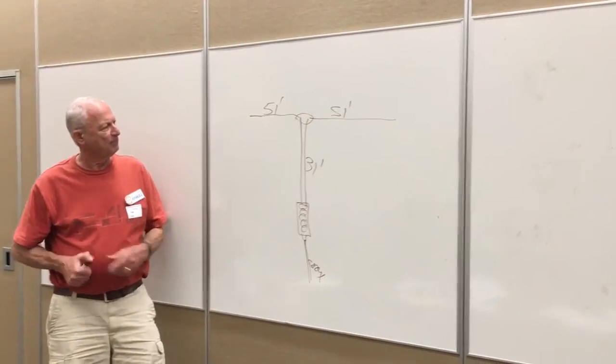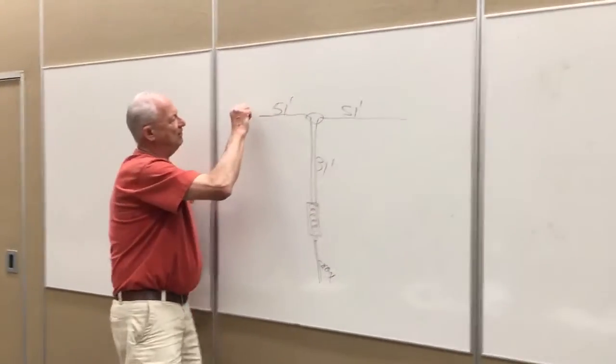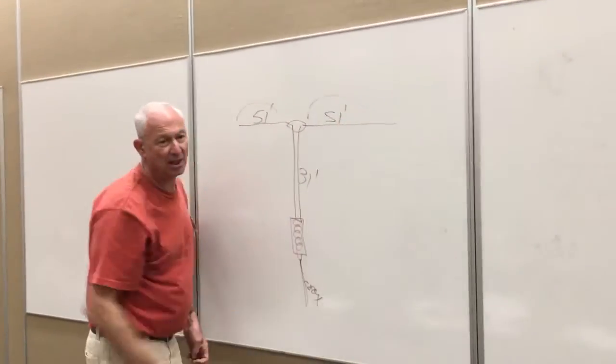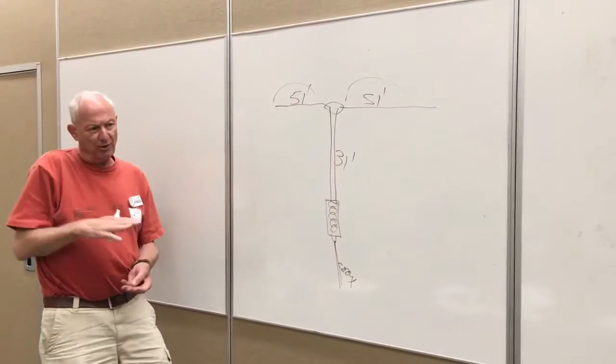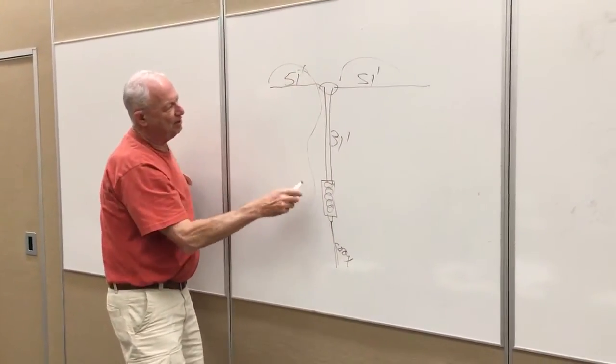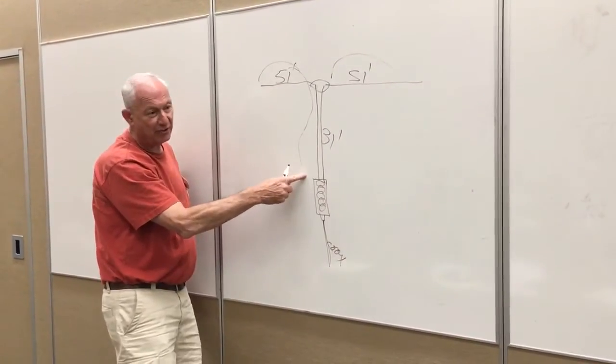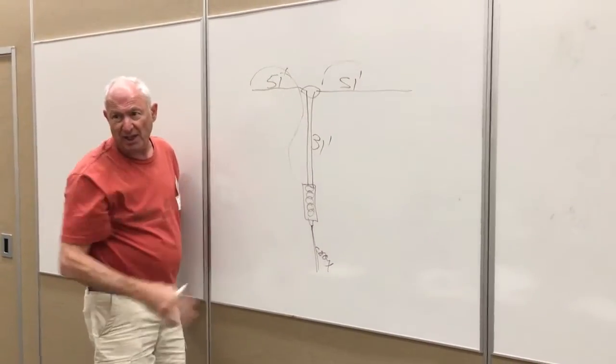So what happens is, on certain frequencies, the wavelength fits into these up there, depending on the frequency. On longer frequencies, lower frequencies, where you need a longer antenna, it actually goes down into here and uses this part called the matching section as part of the active antenna itself.